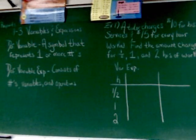We have two definitions today. The first one is the definition of a variable. A symbol that represents one or more numbers.